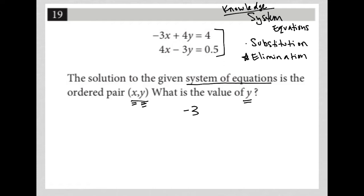So let's rewrite the system of equations. I have -3x + 4y = 4, and then I have 4x - 3y = 0.5.